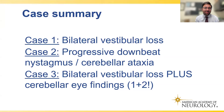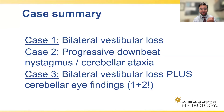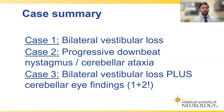CANVAS also always presents with a chronic dry cough, usually appearing 2–3 decades before neurologic symptoms emerge. Autonomic symptoms including urinary incontinence and orthostatic hypotension may occur. MRI of the brain shows cerebellar atrophy of the anterior and dorsal cerebellar vermis. Summarizing the three cases: Case 1 was bilateral vestibular loss; Case 2 was progressive downbeat nystagmus with cerebellar ataxia; Case 3 was a combination — bilateral vestibular loss plus cerebellar dysfunction plus sensory neuropathy. CANVAS patients have severe balance difficulty because all three balance modalities are compromised simultaneously.